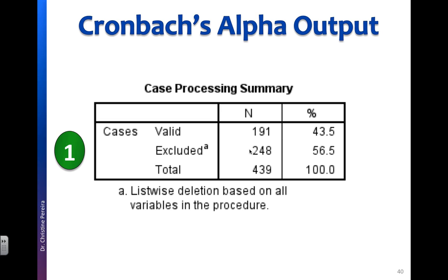We can see we had 191 valid cases and 248 were excluded, for a total of 439. There's a superscript A next to 'excluded' at the bottom, which says listwise deletion based on all variables in the procedure. That means if there was a missing value for any of the items for a participant, they were deleted completely. Listwise means going horizontally by row — if a participant had one missing value, that participant was omitted from the Cronbach's Alpha calculation.